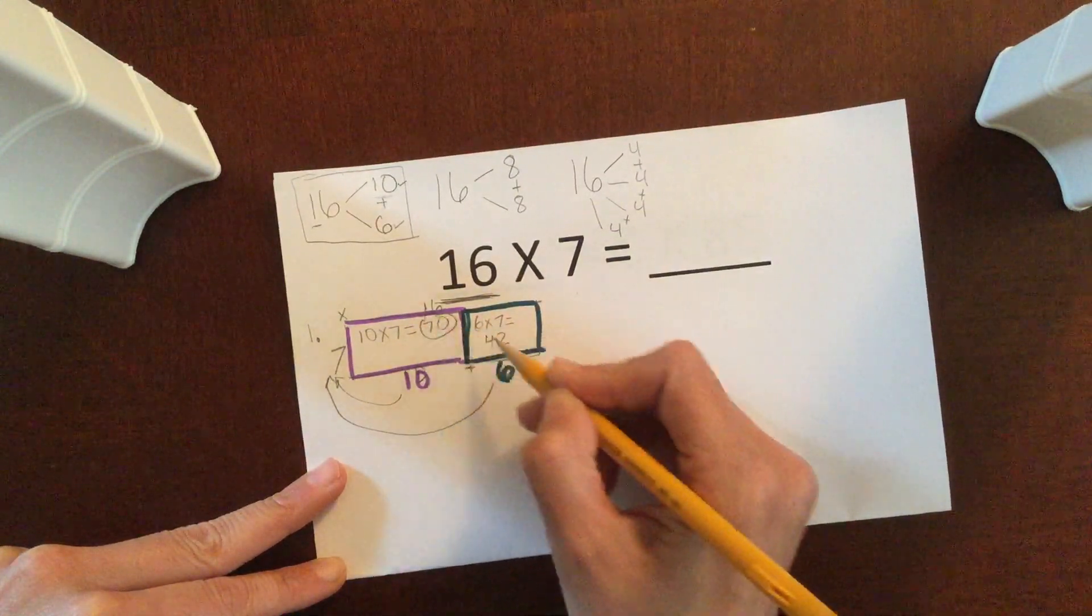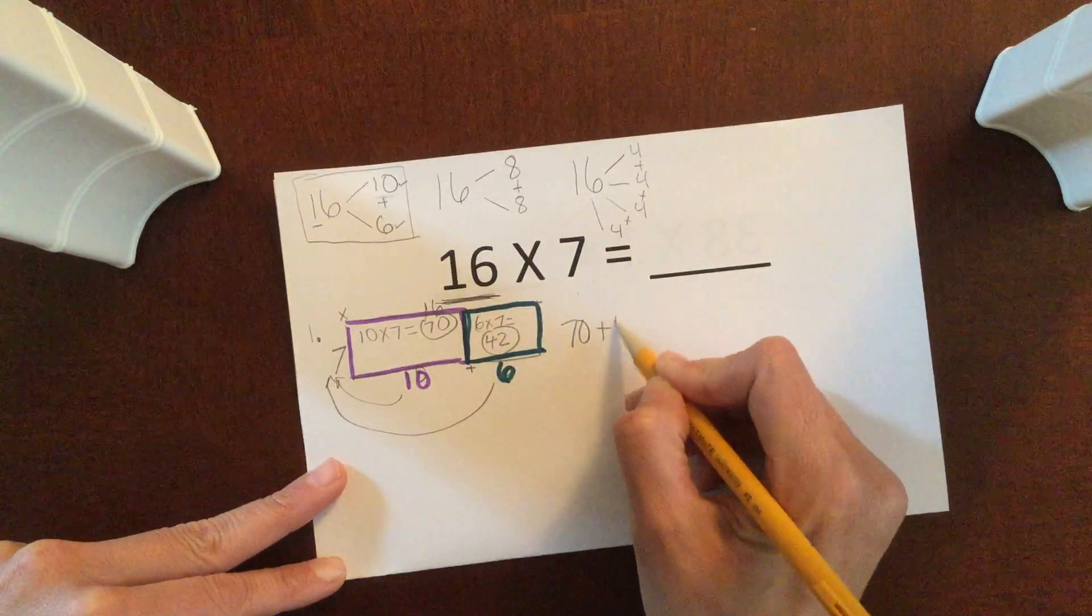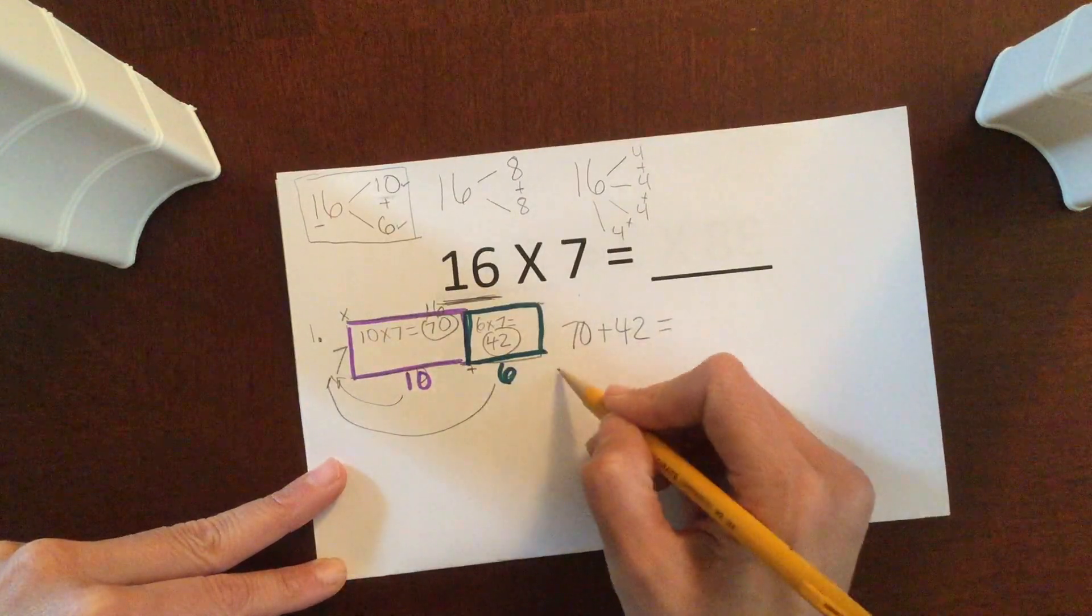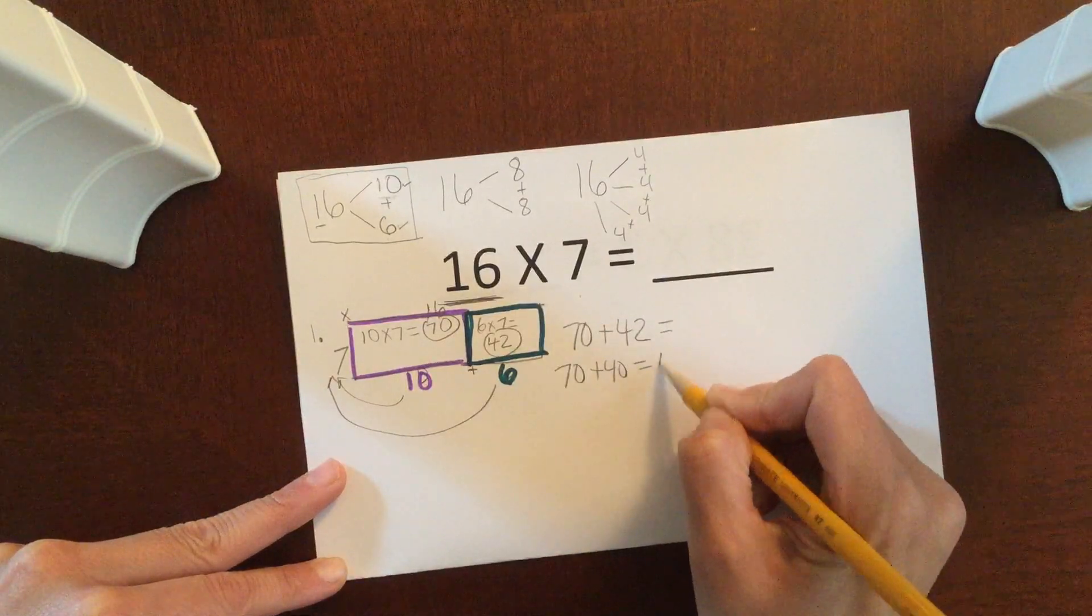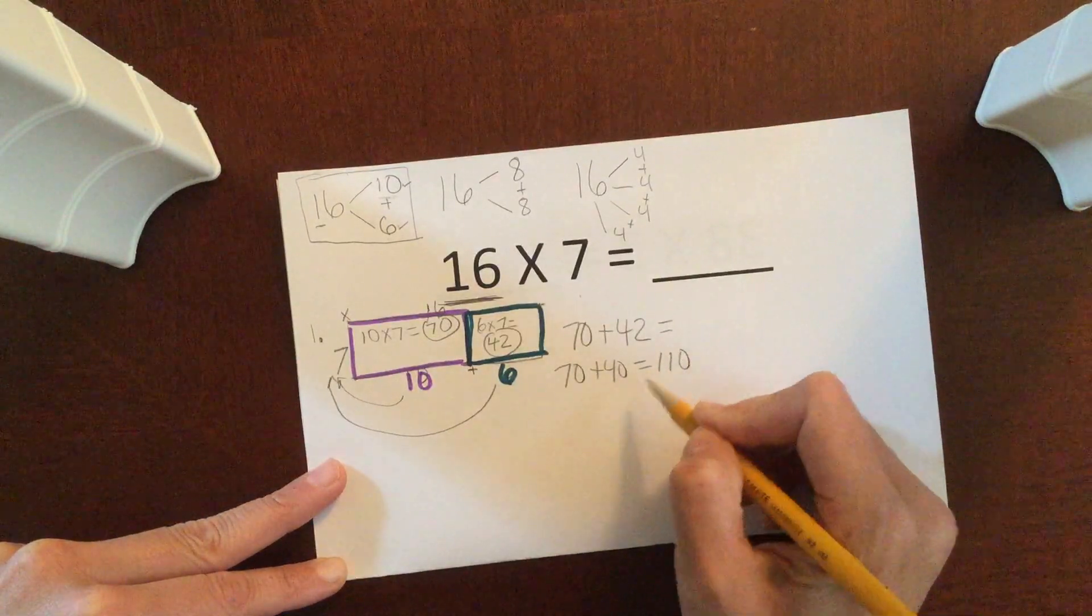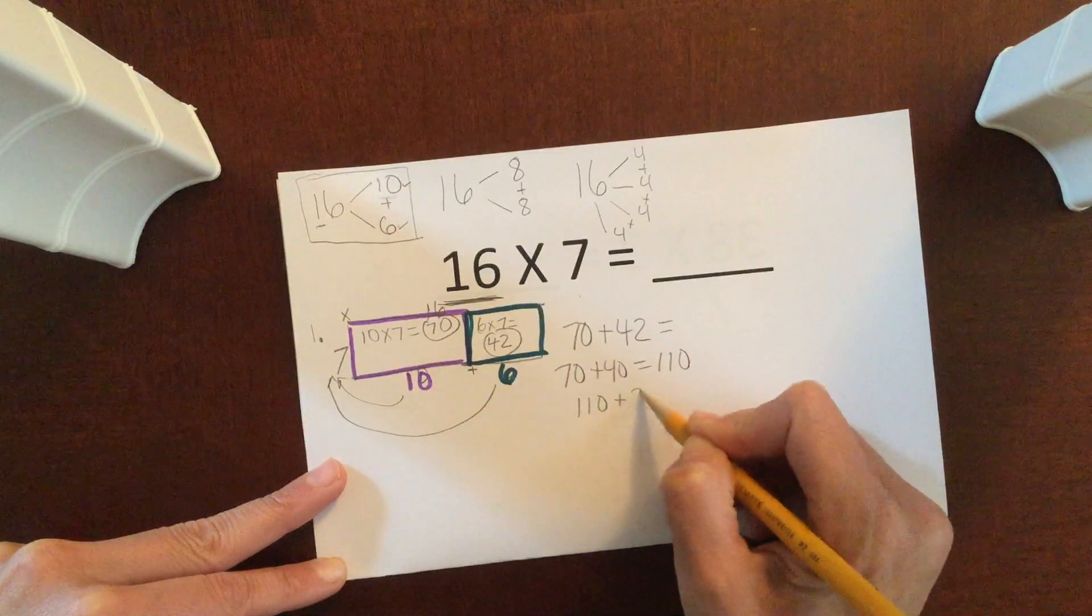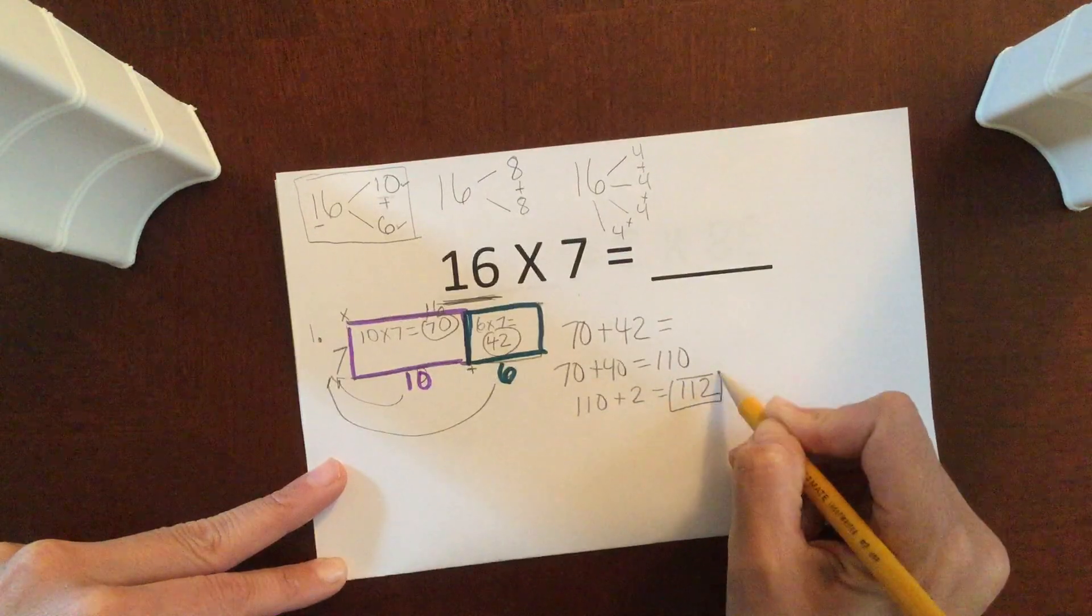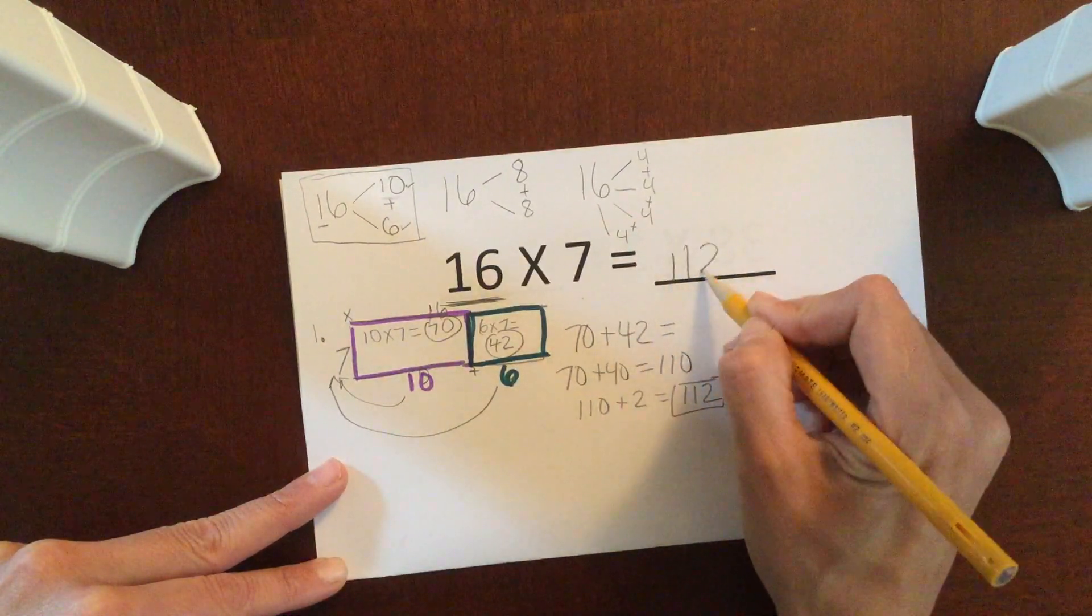So I'm taking my 70 and I'm taking my 42, and I'm adding up those pieces. So 70 plus 40 is 110. And then 110 plus 2 is 112. So my final answer here to 16 times 7 is 112.